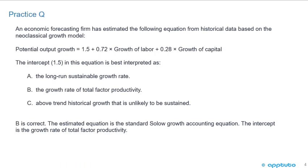That's a good question. B is correct. The estimated equation is the standard Solow growth accounting equation. The intercept is the growth rate of total factor productivity. So potential output growth equals total factor productivity plus 0.72 times the growth of labor plus 0.28 times the growth of capital.